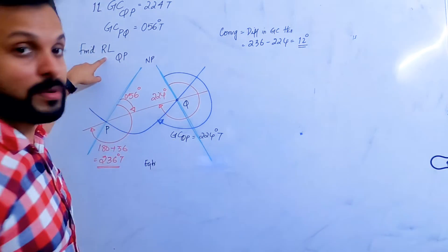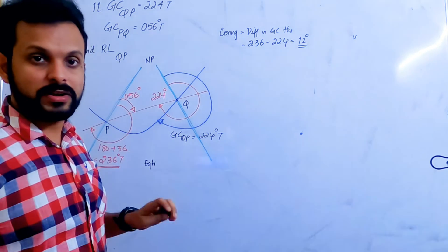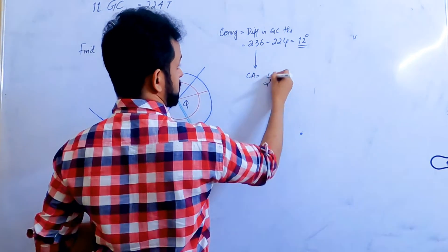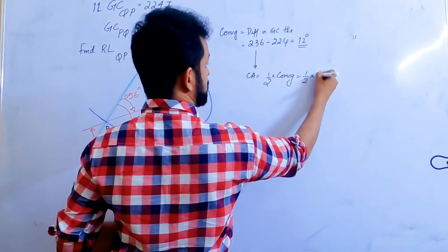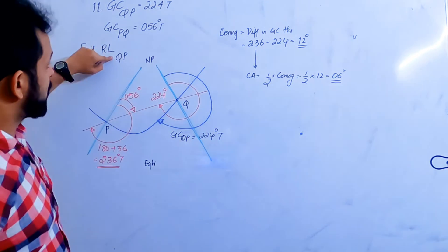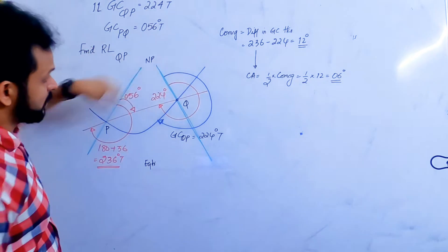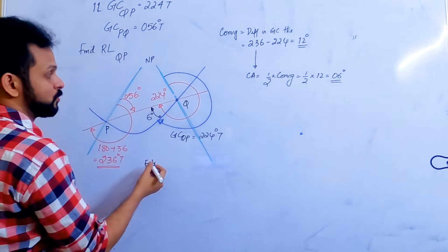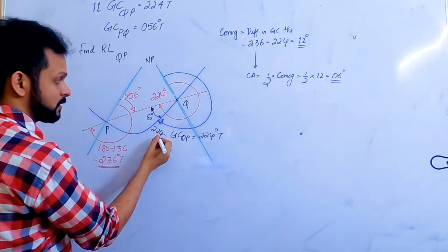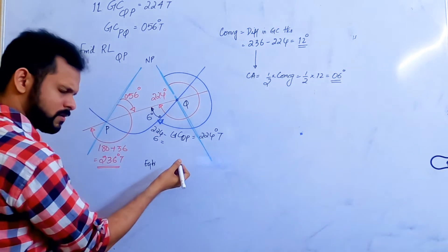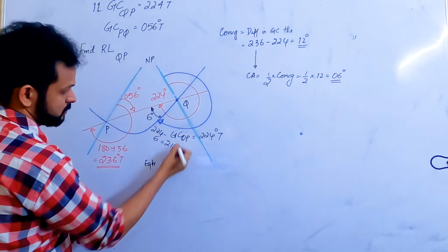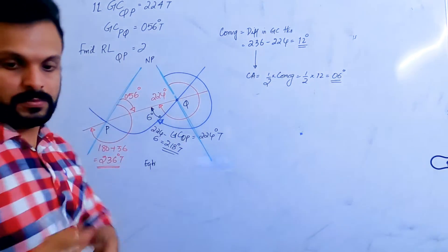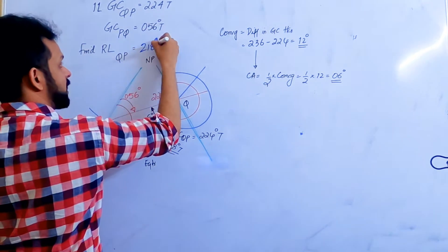Convergency is 12 degrees. To find the rhumb line track I need the conversion angle, which is half of convergency: 12 divided by 2 equals 6 degrees. The rhumb line track from Q to P: great circle is 224, conversion angle is 6, so rhumb line is 224 plus 6 equals 230 degrees. Wait — therefore the rhumb line track from Q to P is 218 degrees. Let me confirm: 218 degrees.